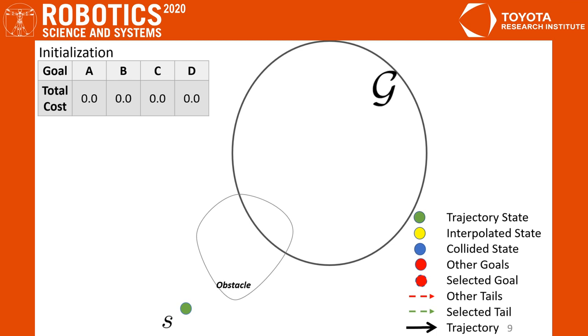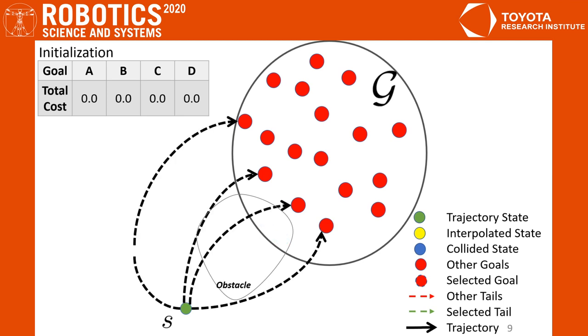We show our planning procedure in the configuration space. We initialize with the start state and a goal set. We first solve inverse kinematics for each goal and filter it by goal collision. Then we compute the costs on the cubic interpolation and use the one with minimal cost as the initial trajectory.